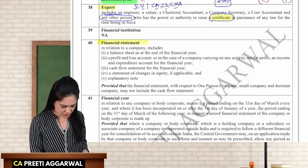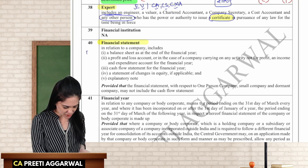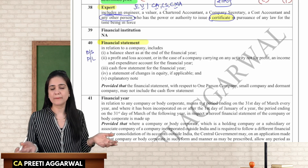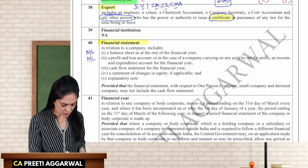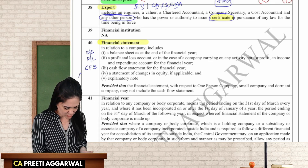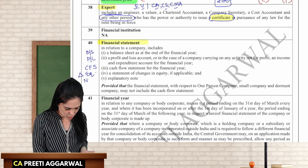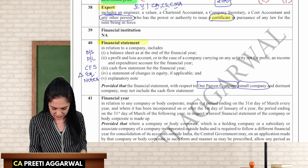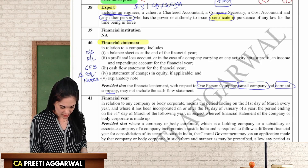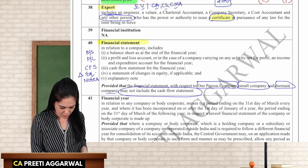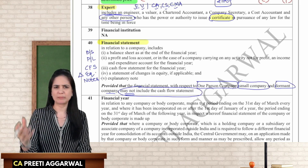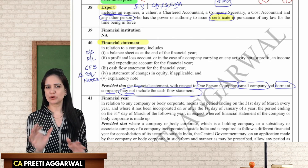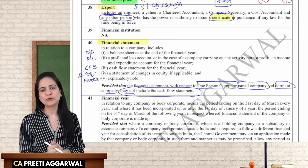Financial statement is a simple definition. It includes balance sheet; profit and loss account (or income and expenditure account for a not-for-profit company); cash flow statement; statement of changes in equity; and explanatory notes. It is important to know that in the case of a one-person company, small company, or dormant company, the financial statement need not include the cash flow statement — this is one of the privileges given to these companies.